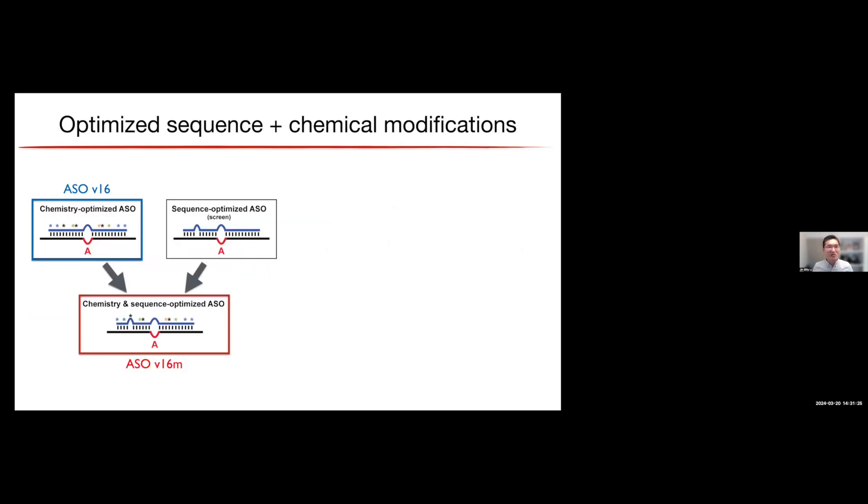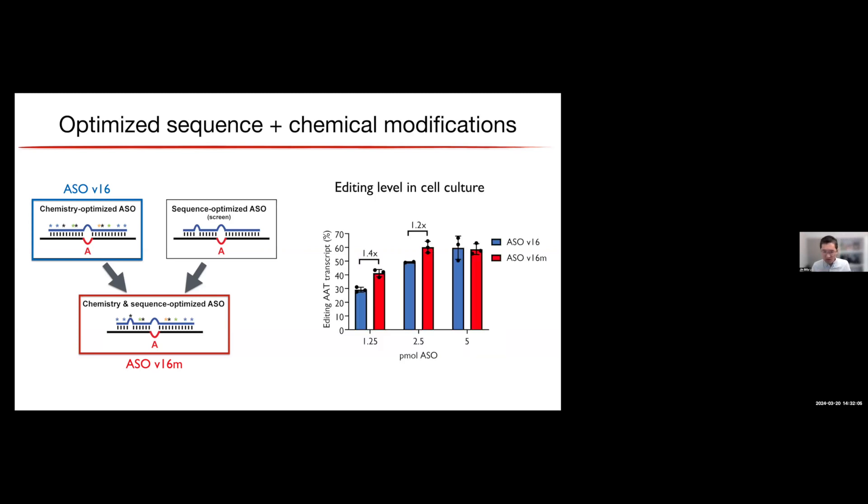So another thing that we did was just to show if we combine the optimized sequence and the chemical modifications that is mostly carried out in Thorsten's lab. For example, in the past, we already have this chemically modified oligos without really considering the sequence optimization. But now if we put all these things together, we ask whether we can have a kind of a synergistic effect or combinatorial effect between this version we call oligo version 16, that is only chemically modified. Version 16M will be both chemically modified and sequence optimized. And that's what we see if we deliver different doses of that chemically modified oligos with or without the sequence optimization. We can see particularly at the lower dose, we can have up to 40% of the increase with sequence optimization. And that, obviously, it's just in vitro experiment. We have some ongoing work in vivo as well.